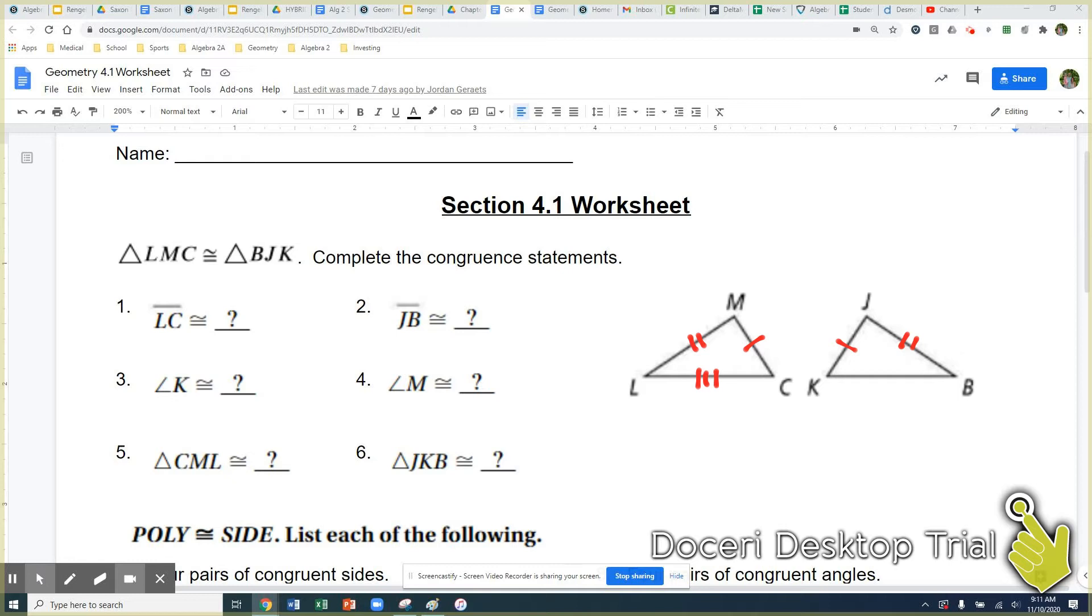LC and BK are congruent and then also each of those angles. All these angles are going to be congruent between the two triangles. So that congruent statement tells us all that information.